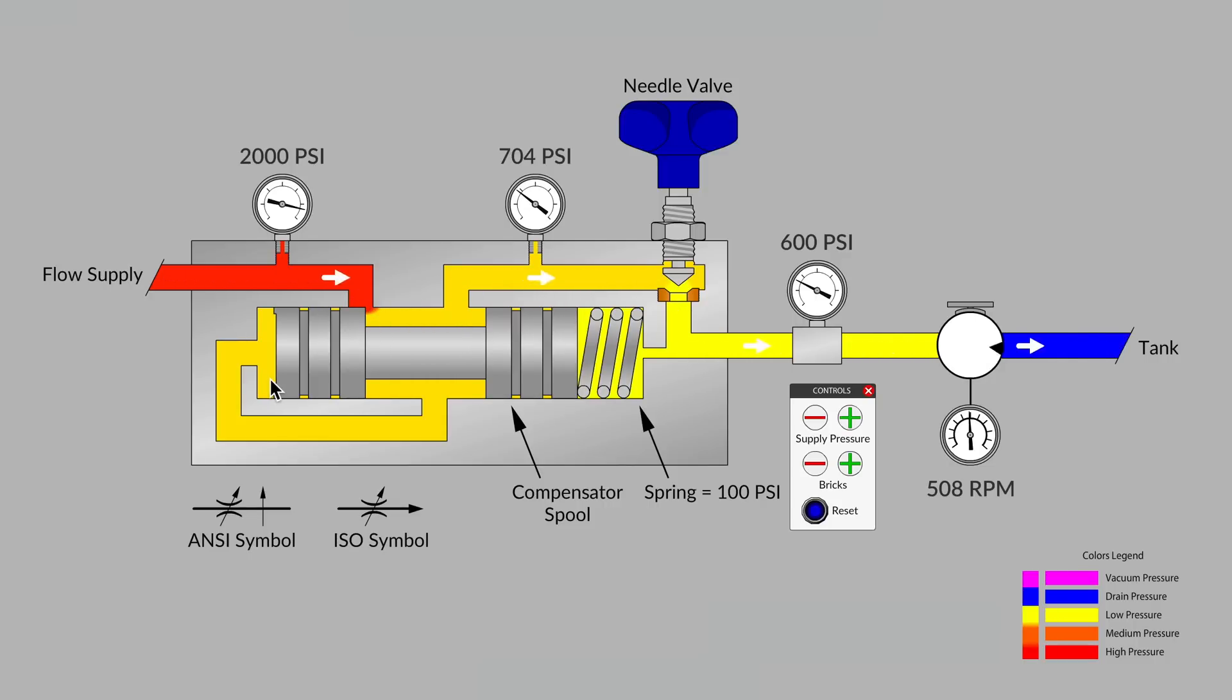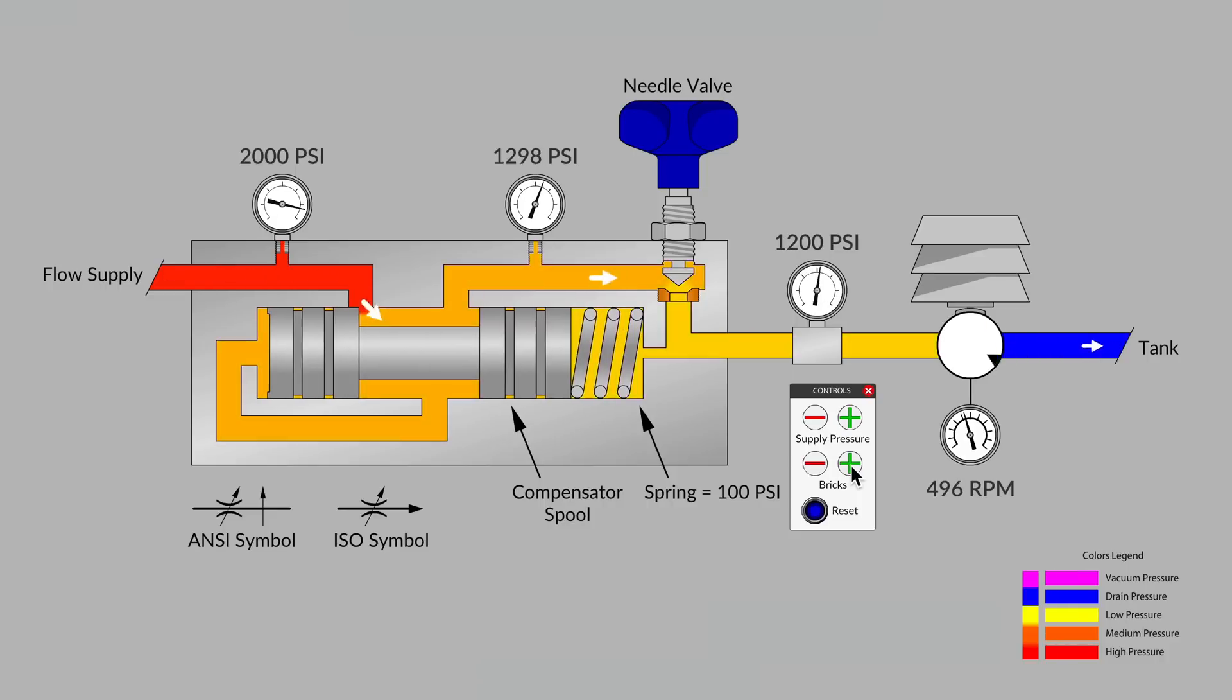One would have to imagine that the pressure needs to change, increase or decrease in this zone a little bit in order for the spool to move right or left and have that fight with the spring on the right hand side. And so that accounts for why we do see a bit of variation on this pressure gauge preceding the needle valve. But it's not much pressure change. And so we notice that even though bricks change on our brick stacker, our RPM stay pretty closely locked in.